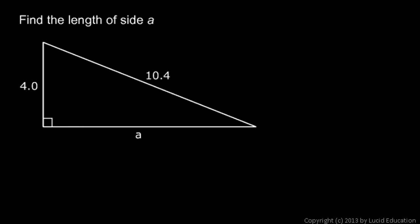Okay, now we'll do some examples that involve the Pythagorean theorem. In this first one we have a simple right triangle and we're given two of the sides, 4 and 10.4, and we need to find the other side, side a down here. But notice that one of the sides that we're given is the hypotenuse.